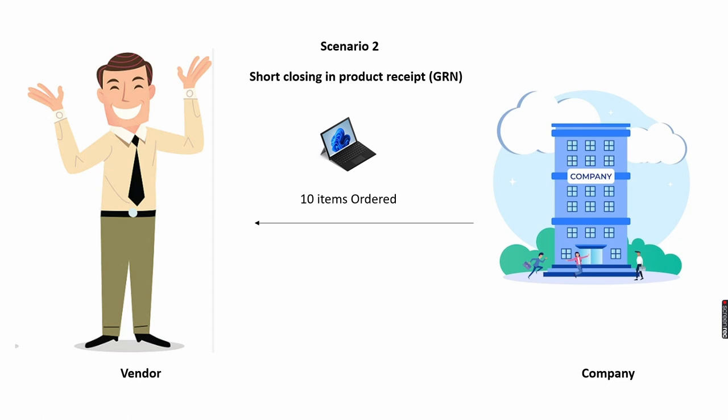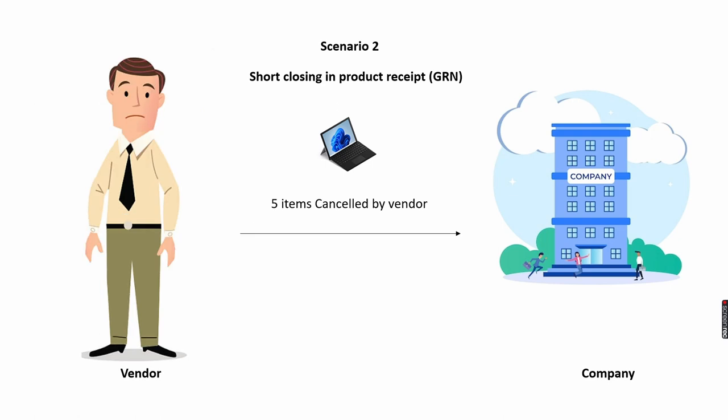In the second scenario, we will place a purchase order for 10 items, but the vendor only delivers 5 items in the first shipment. In this case the vendor communicated that this will be the final shipment and no further items will be sent — perhaps the vendor doesn't have that item in their inventory. So as soon as we receive the first shipment of 5 items, we will proceed to short close the purchase order at the product receipt level.